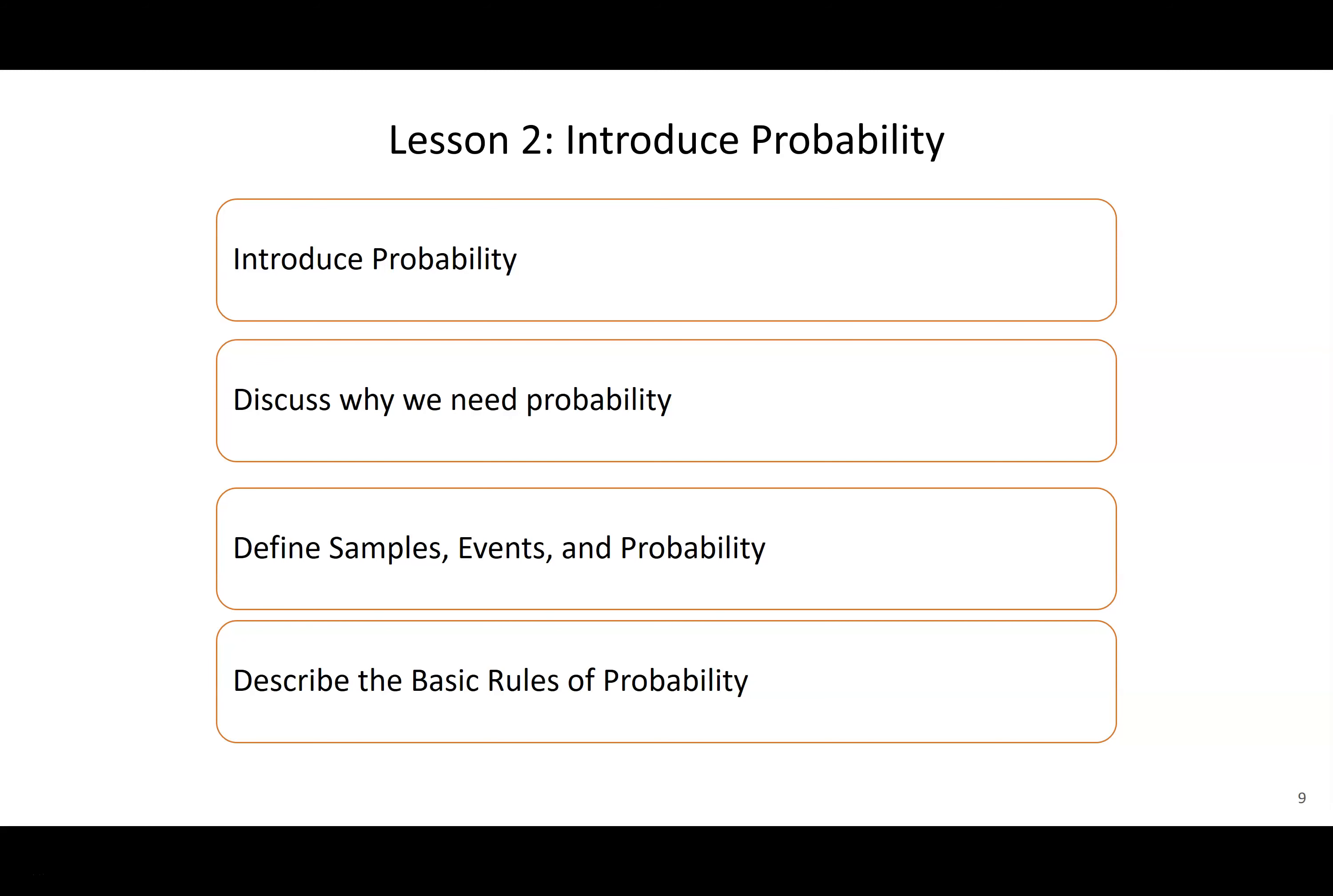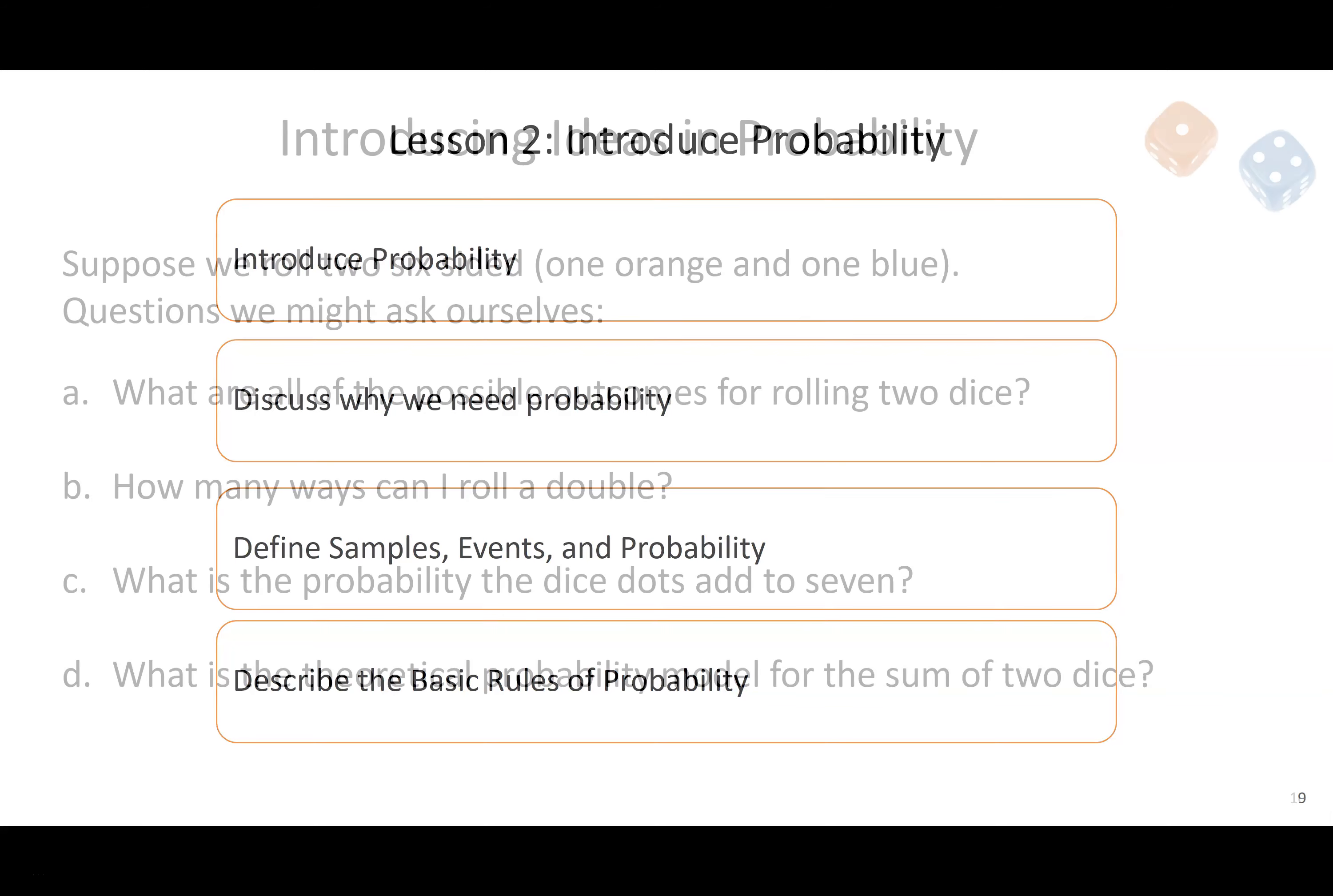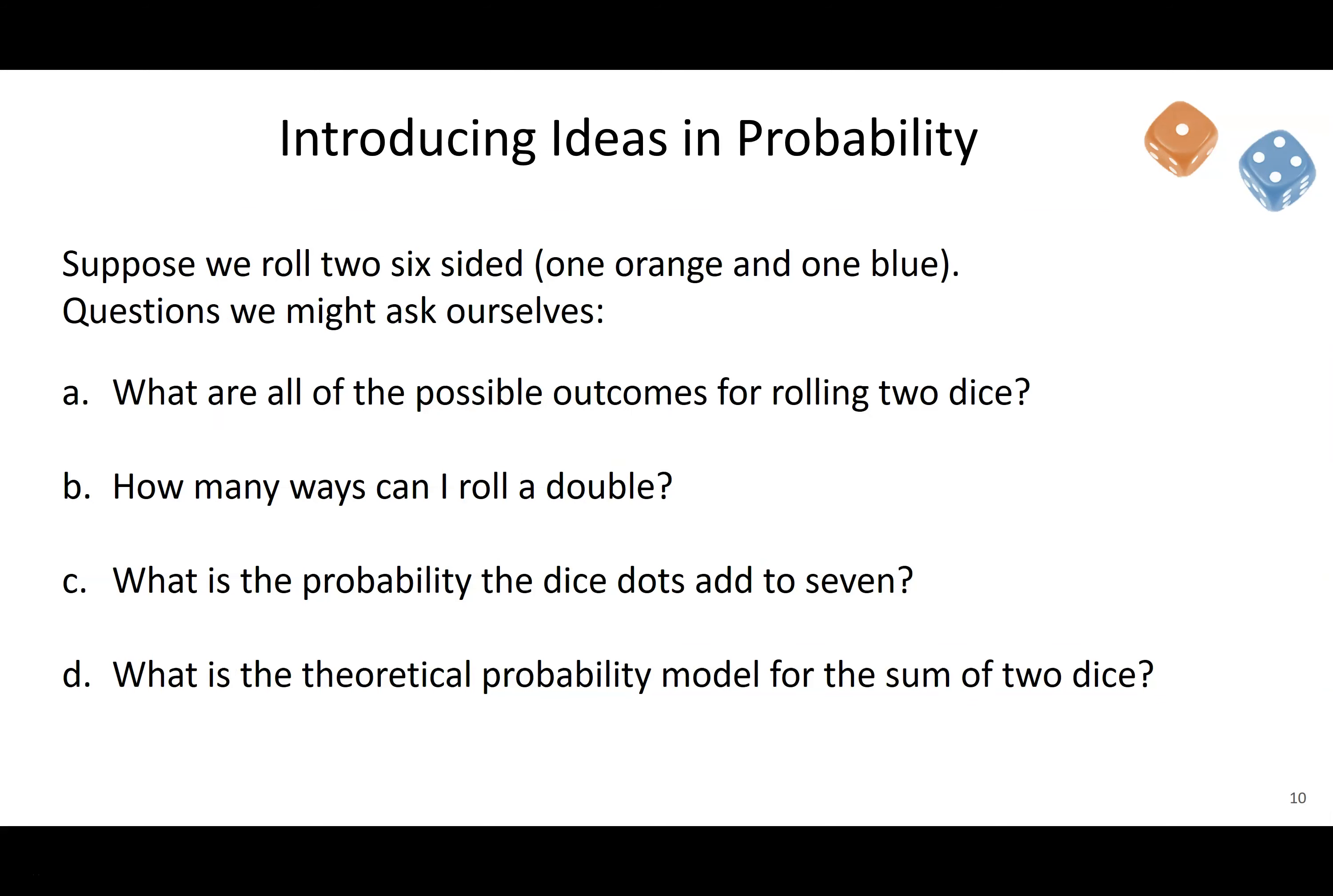Okay, welcome to lesson two. We're going to introduce some probability, make some definitions, and cover some basic rules. So we like to start basic. We love drawing cards from a deck and throwing dice. So we're going to roll two six-sided dice for ease of understanding. I'm going to make one orange and one blue.